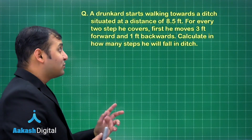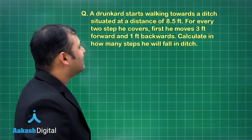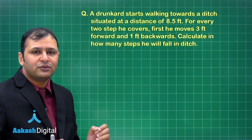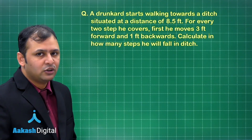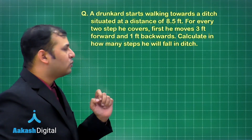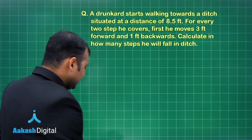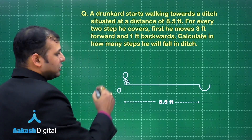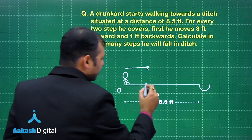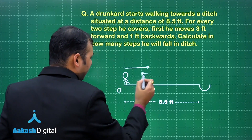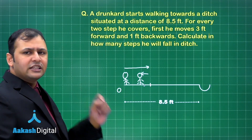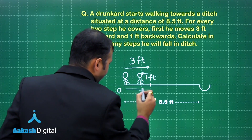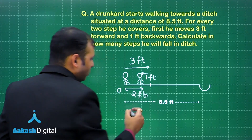Next is a drunkard problem: a drunkard starts walking towards a ditch situated at a distance of 8.5 feet. For every two steps, he moves 3 feet forward and 1 foot backward. So after 2 steps he is at a distance of 2 feet from his original location.